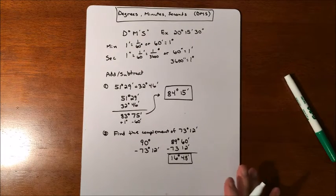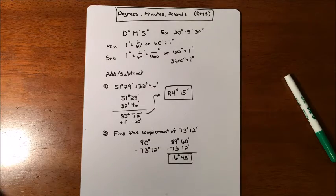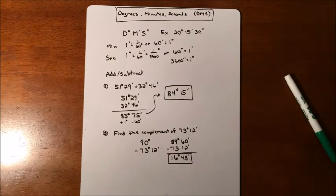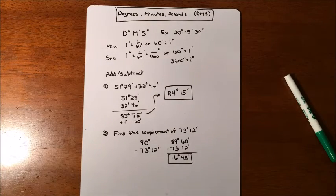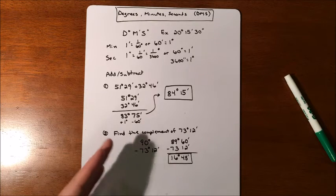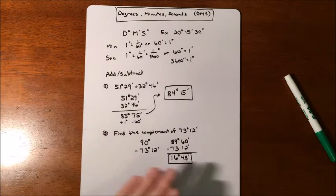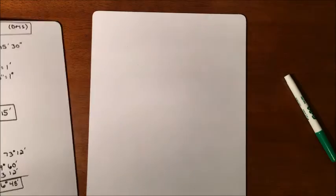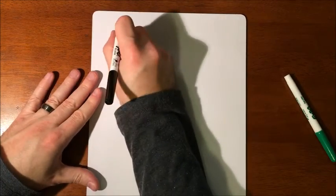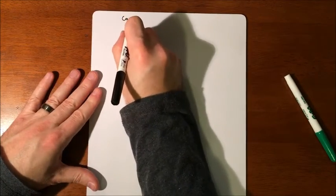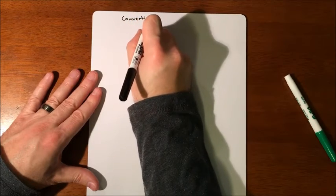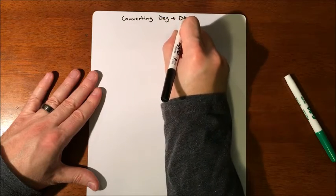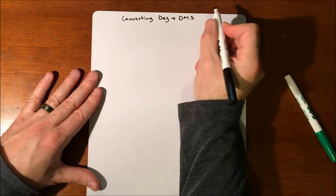So that is kind of some of the basics of adding and subtracting. What about converting a degree into not degrees, minutes, and seconds, but a degree with your decimals into degrees, minutes, and seconds or something that's in degrees, minutes, and seconds into your more of a decimal version of it. So here's your two different directions that you can go. So we could have converting your regular degrees into degrees, minutes, and seconds.